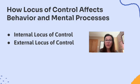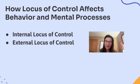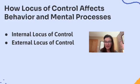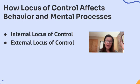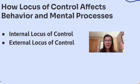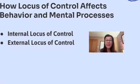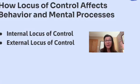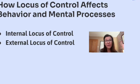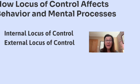Here's a summary of how locus of control affects behavior and mental processes. Internal locus of control promotes proactive behavior, problem solving, and a sense of empowerment. It's associated with higher academic and professional achievement, but can sometimes lead to overconfidence and self-blame. External locus of control may lead to passivity, avoidance, and reliance on others. It's associated with feelings of helplessness and stress in uncontrollable situations, though it can be helpful in accepting uncontrollable outcomes.